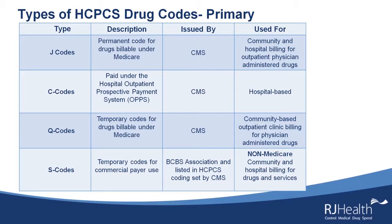C codes come out more frequently than J codes. J codes are typically released for new products on the calendar year, whereas C codes can be released at the midpoint of the year or on a quarterly basis. These are typically hospital-based for outpatient hospital billing. They are paid under OPPS, the Hospital Outpatient Prospective Payment System, and they are also created by CMS.